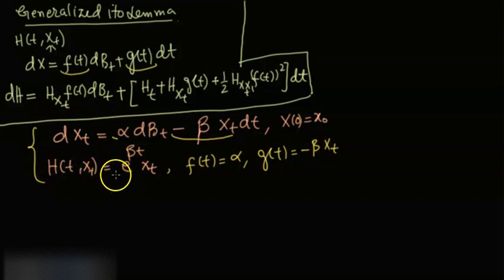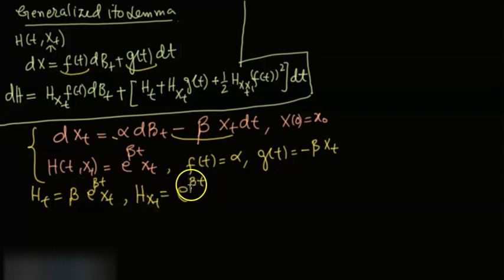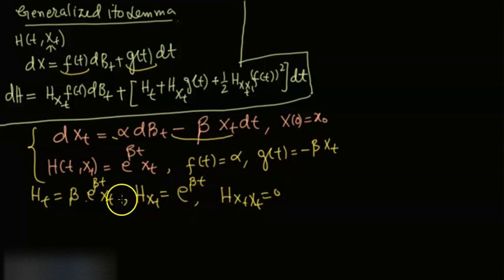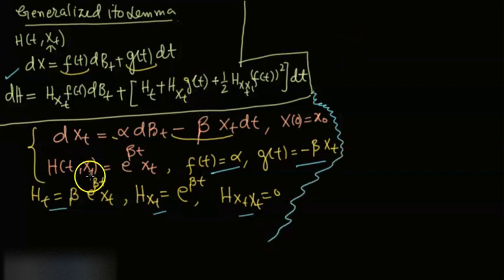I need the partial derivatives of h with respect to t, x, and xx. The partial derivative of h with respect to t is β·e^(βt)·X(t). The partial derivative of h with respect to x is e^(βt). The second partial derivative of h with respect to x is zero. We now insert these values into the Itô formula.